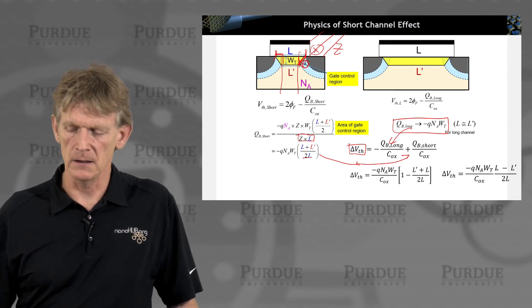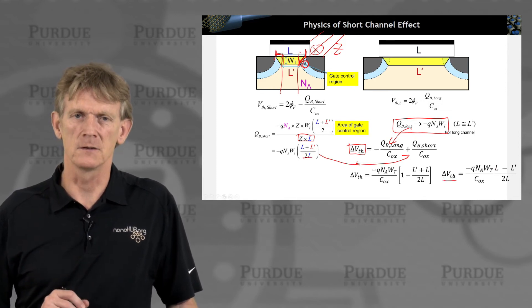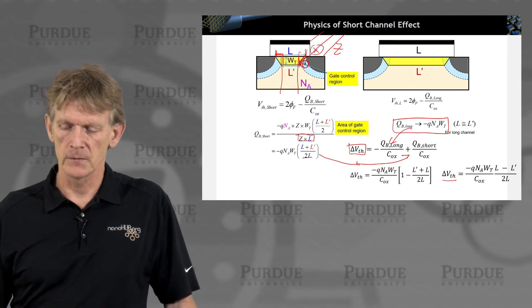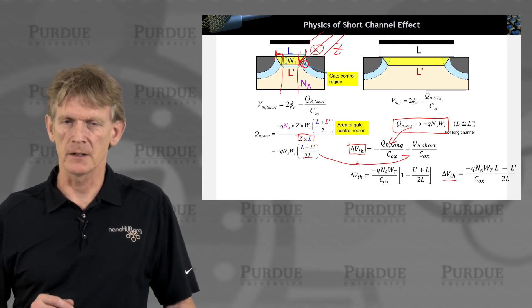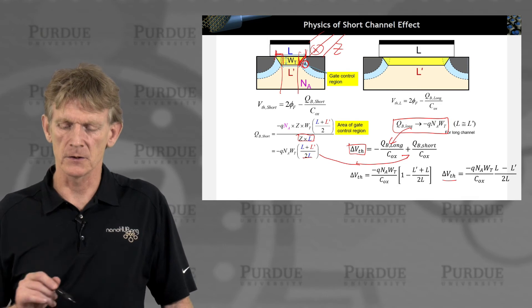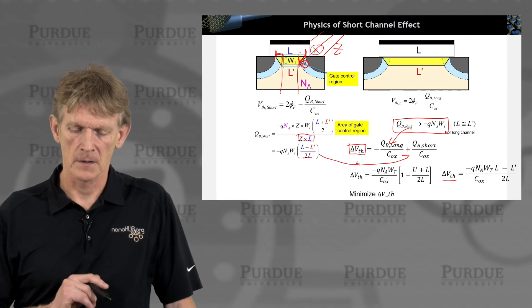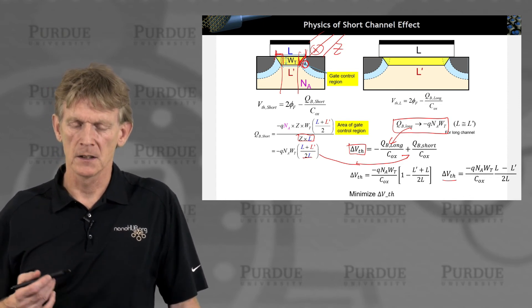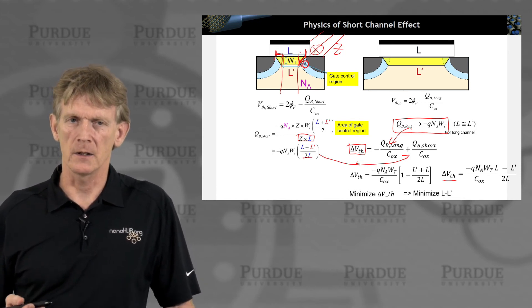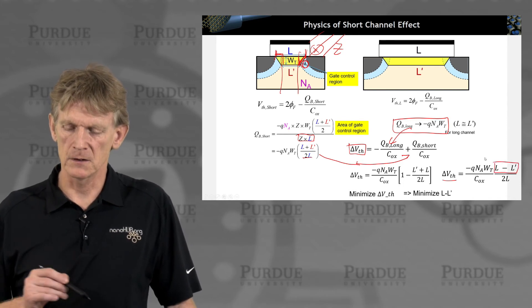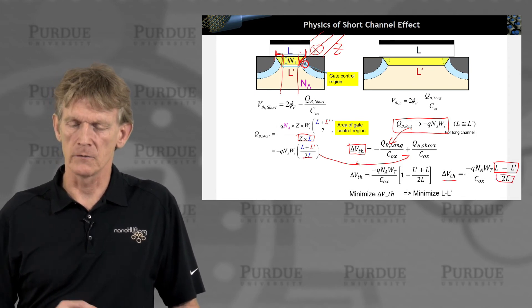In the limit of L prime being close to L, that threshold voltage change is zero. But as the two are getting, if the difference between L and L prime is getting larger, then this threshold shift is getting larger as well. You have a negative term in here. What you want to do is minimize the threshold shift. You want to minimize L minus L prime on the relative scale of the overall channel.